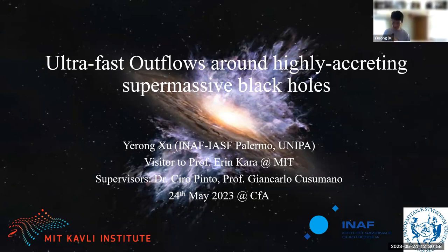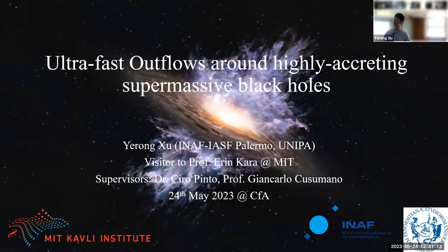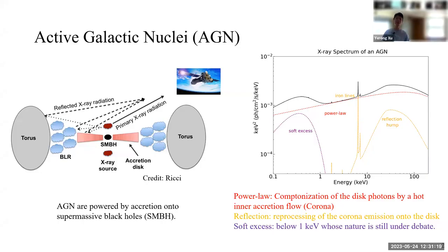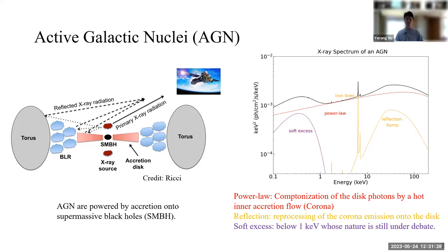Thanks for the brief introduction. I'm Yerong Xu, a visiting graduate student to Professor Aaron Cara at MIT. Today I would like to talk about the ultra-fast outflows around highly accreting supermassive black holes. I believe most of you are familiar with AGN, but let me give a brief introduction. The whole name of AGN is active galactic nuclei, which is powered by the accretion onto supermassive black holes.